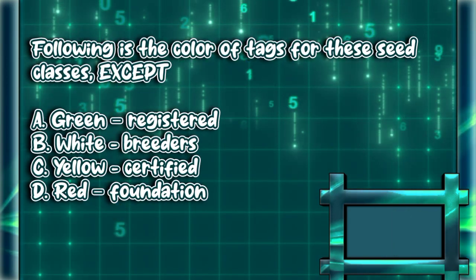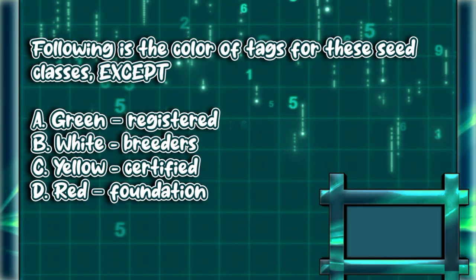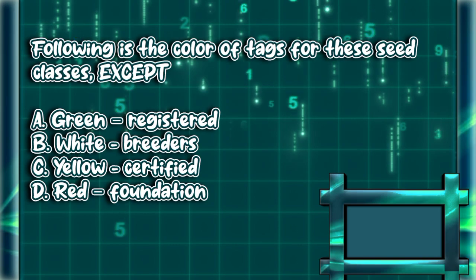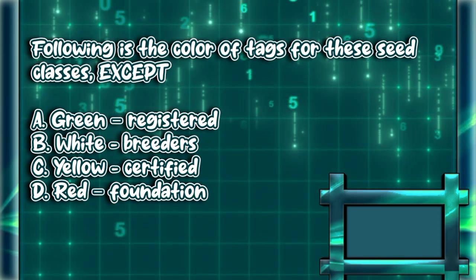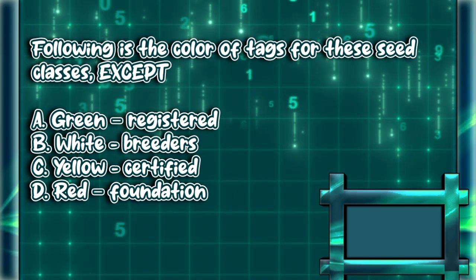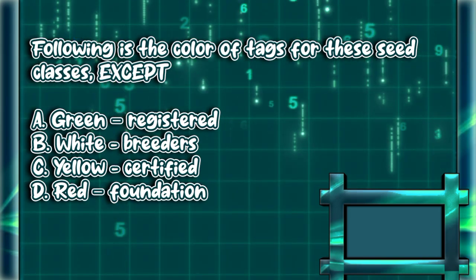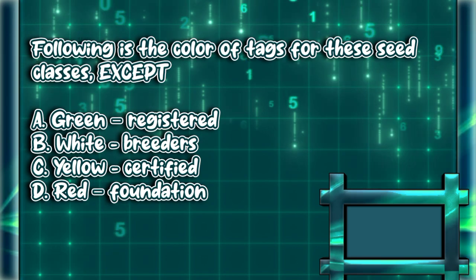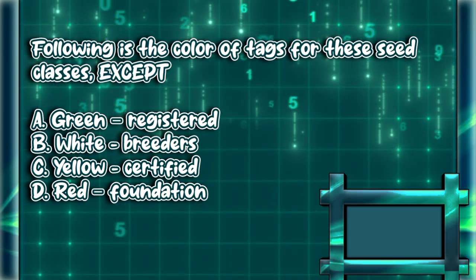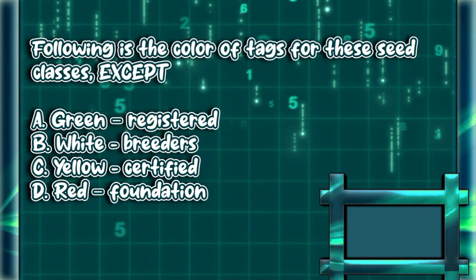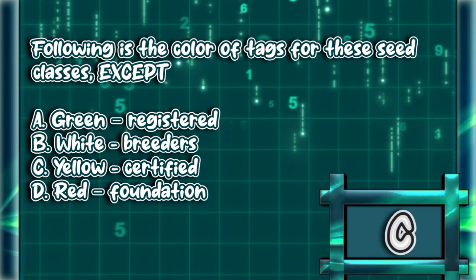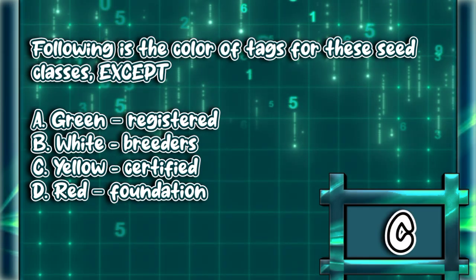Following is the color of tags for these seed classes, except: A. Green — Registered. B. White — Breeders. C. Yellow — Certified. D. Red — Foundation. The answer is letter C.